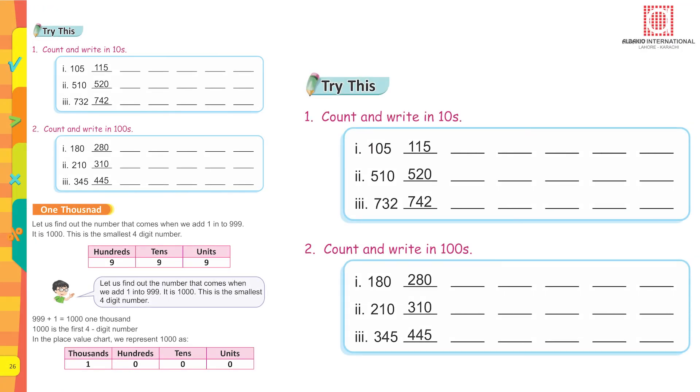Count and write in tens: 105 plus 10 equals 115, plus 10 equals 125, plus 10 equals 135, plus 10 equals 145, plus 10 equals 155, plus 10 equals 165. This is how you are going to do the remaining two parts.